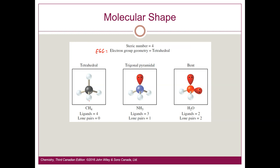If you have four electron groups, the EGG is tetrahedral. For methane: four ligands, zero lone pairs — four electron groups total. So the EGG is tetrahedral and the molecular geometry is tetrahedral. For ammonia, nitrogen is in the middle with a hydrogen coming out, one going back, another going back, and a lone pair. That gives three bond groups and one lone pair, a total of four. Those four blobs try to get away from each other as much as possible.